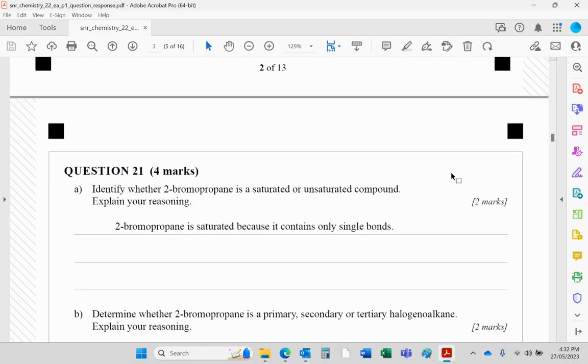Question 21 part a: identify whether 2-bromopropane is saturated or unsaturated. Saturated means single bonds only, unsaturated means double or triple bonds. It doesn't have double or triple bonds and therefore it is saturated. That's worth two marks, so you get one mark for saying it's saturated and one mark for saying why.